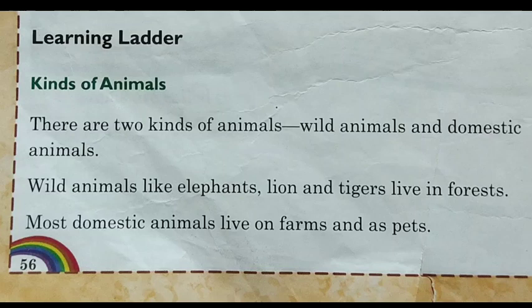Now let's see the learning objectives — kinds of animals. We will learn how many types of animals there are. There are two kinds of animals: wild animals and domestic animals. Today in this video, we are just going to learn about the domestic animal, and specially about farm animals.